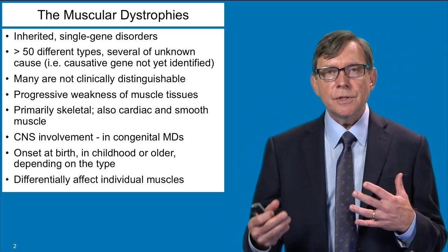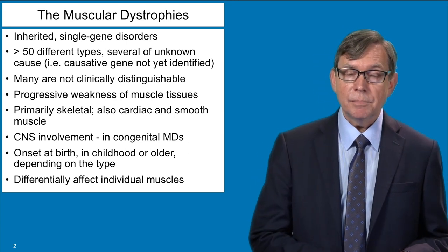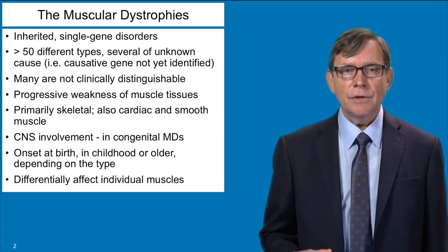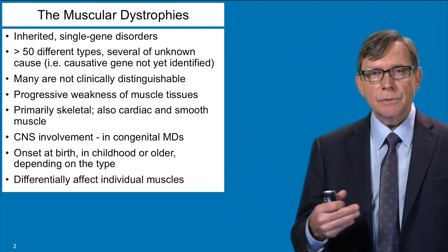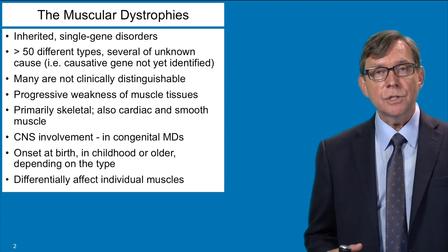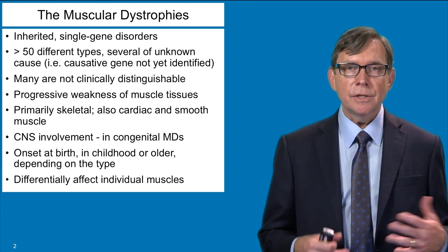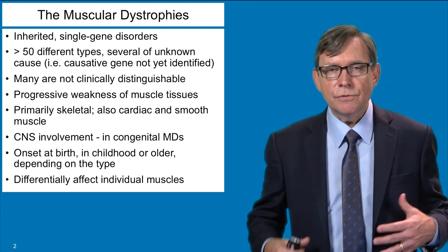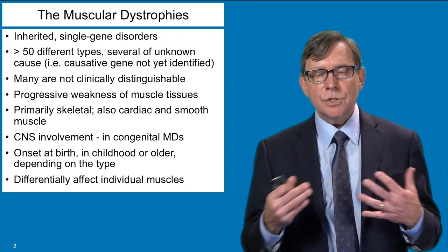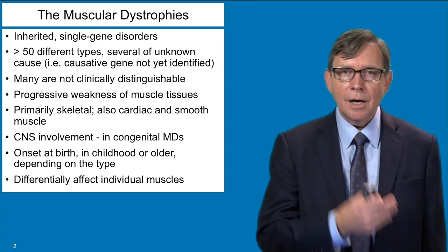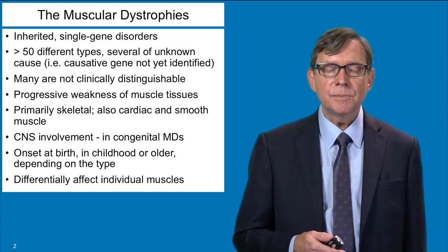Different muscular dystrophies have different characteristics that allow one to try to distinguish them. There are a lot of differences in the age of onset — some muscular dystrophies come on at birth, some don't appear until early childhood, some appear in young adults, and some also appear in older individuals. The different forms can also differentially affect different muscles. Some dystrophies start around the pelvic region, some will start around the shoulders, and there's not always a common picture of which muscles are affected.